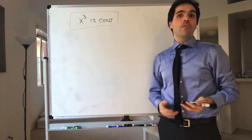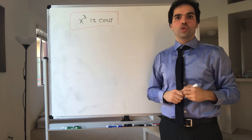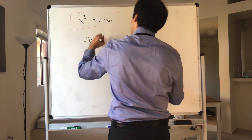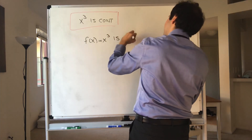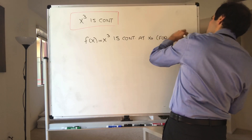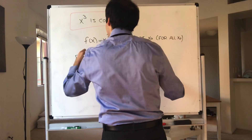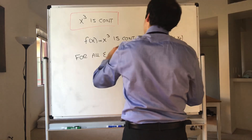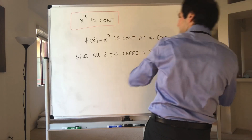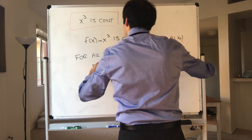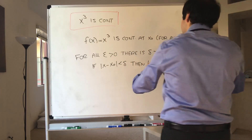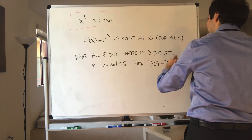All right, thanks for watching. Today I want to prove that the function x cubed is continuous. So what we have to show is that f of x equals x cubed is continuous at every x naught, for all x naught, which just means the following — with the epsilon-delta definition, for all epsilon positive, there is delta positive, such that if x minus x naught is less than delta, then f of x minus f of x naught is less than epsilon.